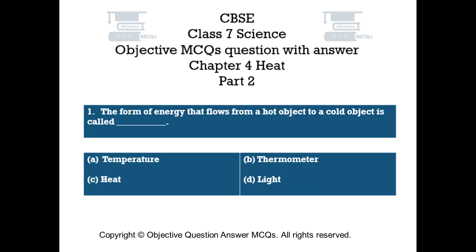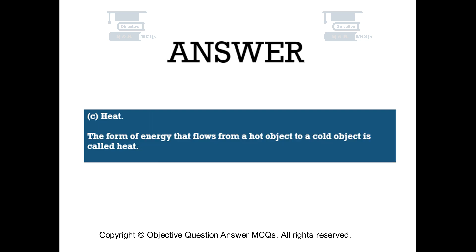Question number 1. The form of energy that flows from a hot object to a cold object is called — Option A: temperature, Option B: thermometer, Option C: heat, Option D: light. The right answer is Option C — Heat. The form of energy that flows from a hot object to a cold object is called heat.